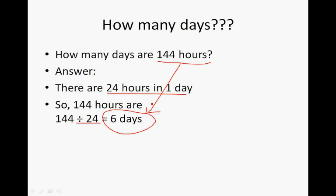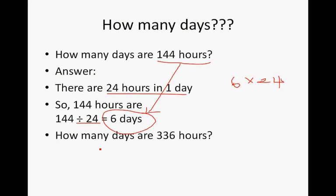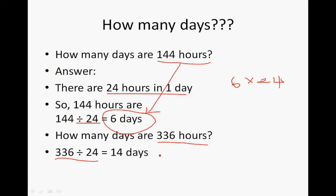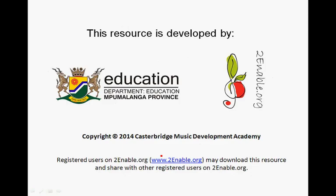How many days are in 336 hours? We go 336 divided by 24, and that gives us 14 days.